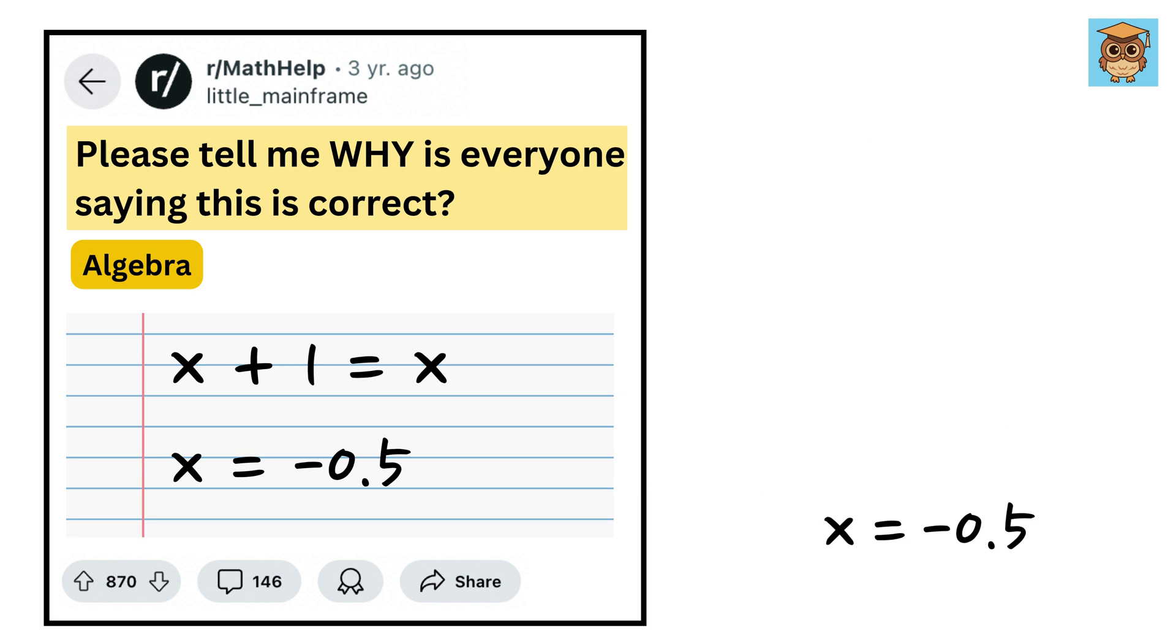But that does not satisfy the original equation. -0.5 + 1 = 0.5, and not -0.5. So can you guess what went wrong here?